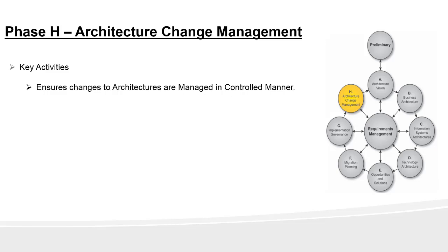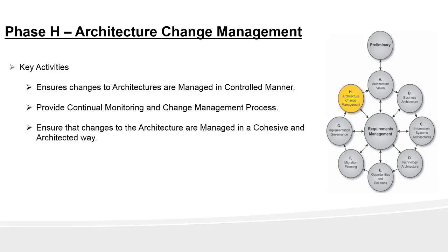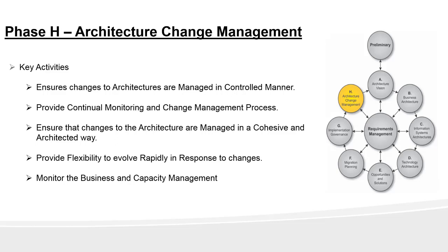Some of the key activities of this phase are: provide continual monitoring and a change management process where as an architect you track changes and monitor the change management process; ensure that the changes to the architecture are managed in a cohesive and architected way; provide flexibility to evolve rapidly in response to changes in the technology or business environment; and lastly, monitor business and capacity management.